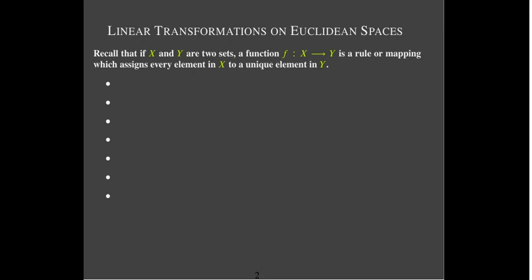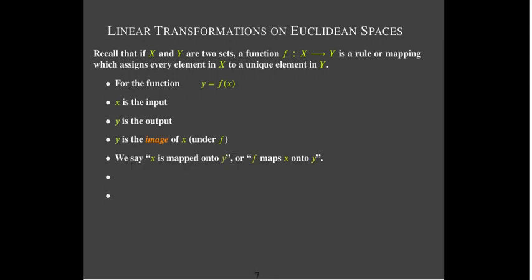Let's go back and review some terminology from the scalar functions we've been studying since elementary algebra. We have two sets and a mapping or rule that takes objects in the first set and maps them onto objects in the second set. For that mapping to be a function, for every x you have to have only one y. So for this function y which is a function of x, x is the input, y is the output. We also call y the image of x — I'll be using that word image a lot in this course. We say x is mapped onto y, or f maps x onto y.